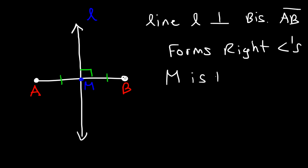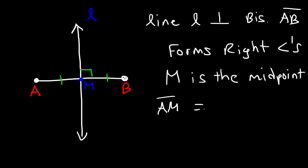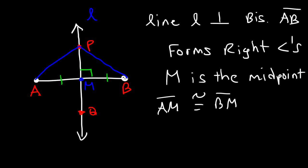Therefore, M is the midpoint of segment AB, and AM is congruent to BM. The perpendicular bisector has features of both an altitude and a median. Now, let's say we put points P and Q on the perpendicular bisector. Any point on this line is going to be equidistant to the endpoints of the segment. So AP and BP are congruent, and AQ is congruent to BQ. Notice that the perpendicular bisector forms congruent triangles.